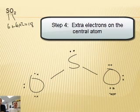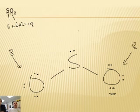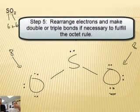Now we go to the outside: six, eight, ten. He's happy there because he's got eight. Twelve, fourteen, sixteen, and then the extra ones go on the central, so 18.